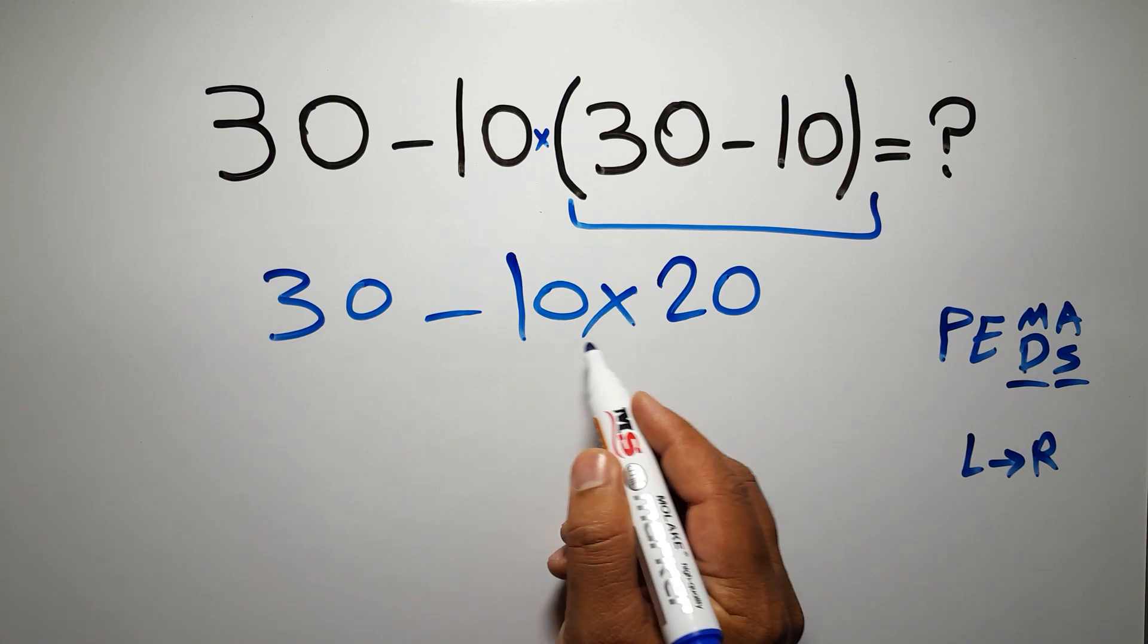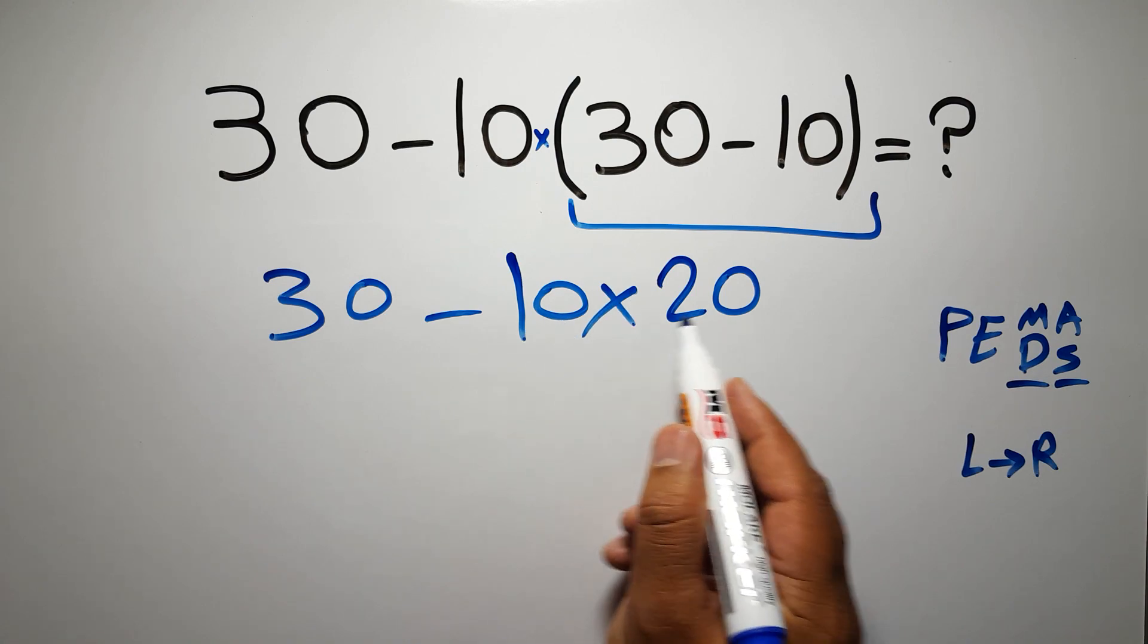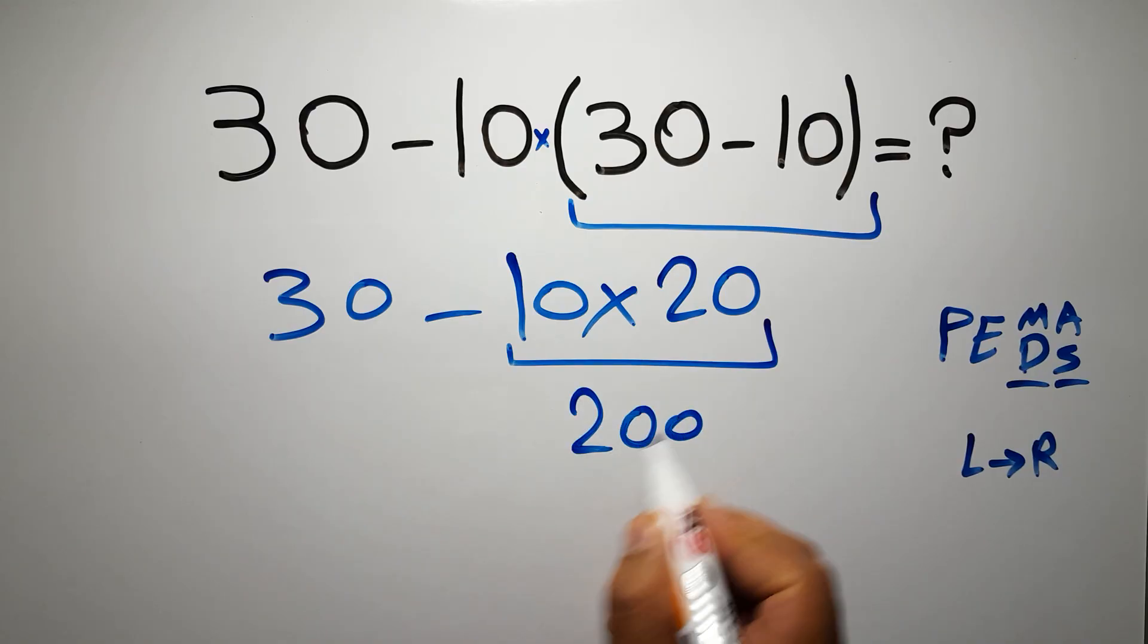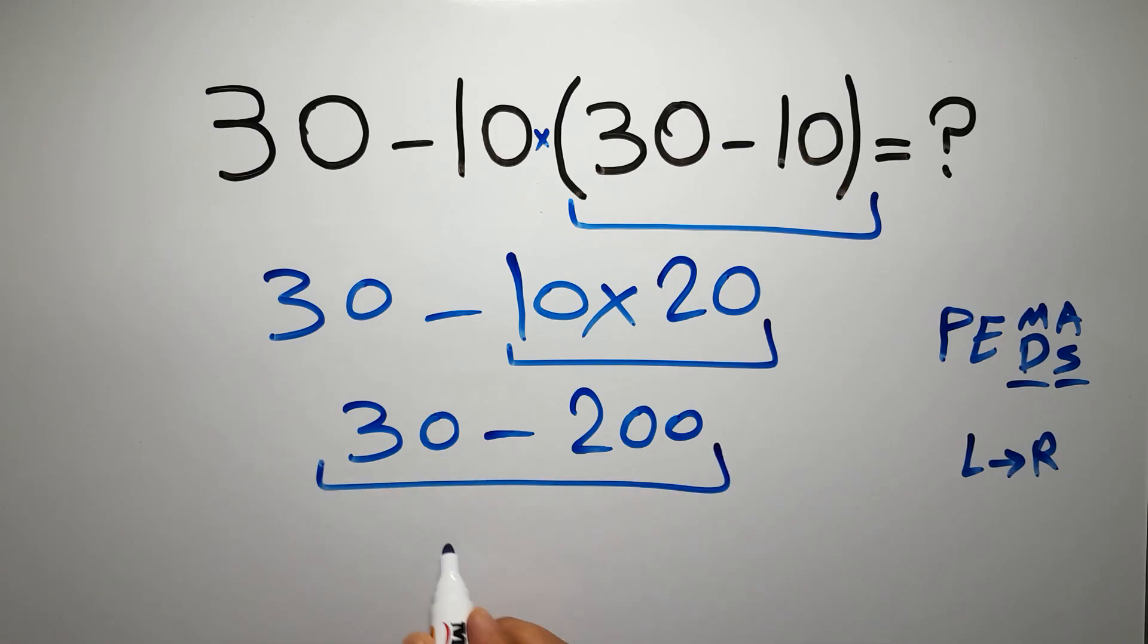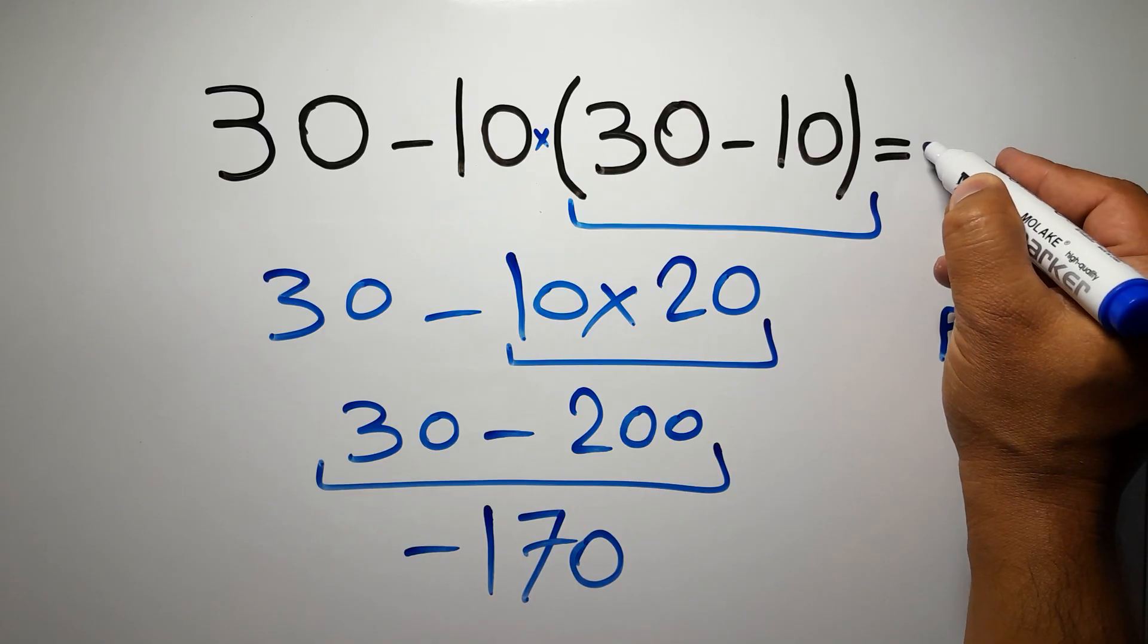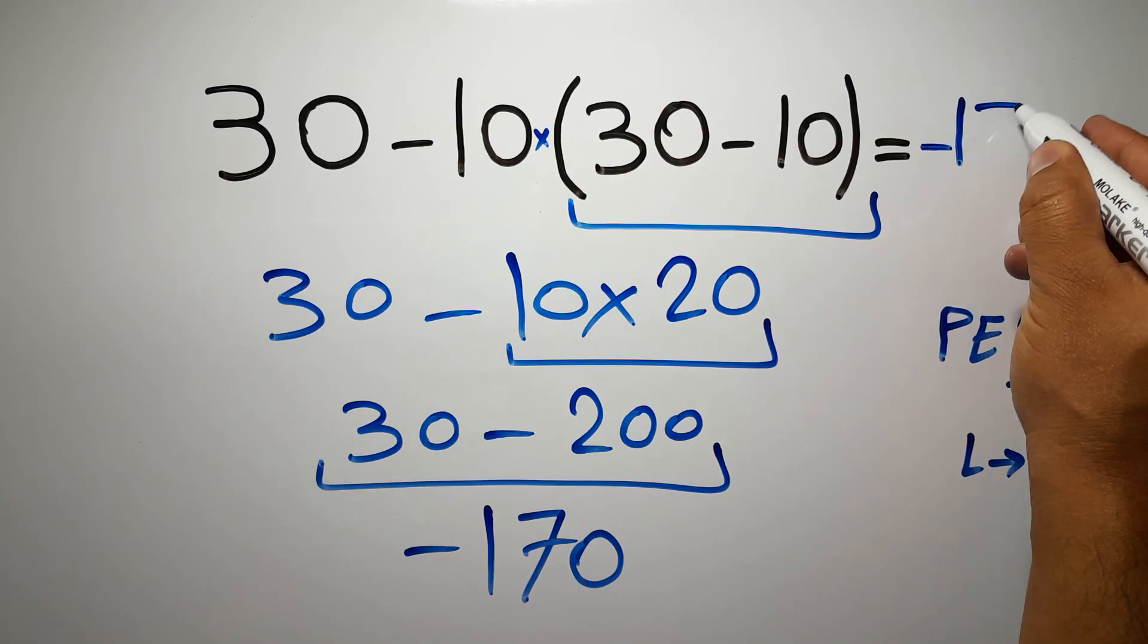10 times 20 gives us 200, so 30 minus 200, which equals negative 170. And this is our final answer to this problem. The correct answer is negative 170.